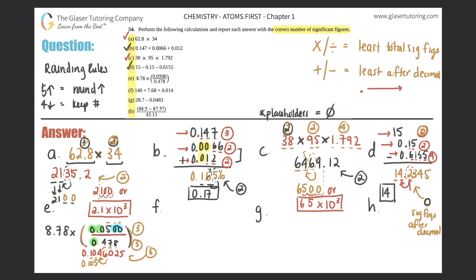Now multiply that result by 8.78: 8.78 times 0.105 gives 0.9219. 8.78 has three sig figs, and the intermediate result had three sig figs, so the answer should have three sig figs: 9, 2, and 1. The next digit 9 rounds the 1 up to 2. The final answer for e is 0.922.